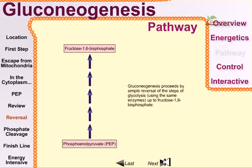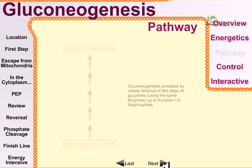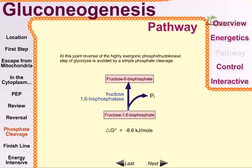Gluconeogenesis then proceeds by a simple reversal of the steps of glycolysis using the same enzymes, up to fructose-1,6-bisphosphate. After phosphoenolpyruvate is generated, it is easily converted into fructose-1,6-bisphosphate via the normal glycolysis enzymes running in reverse. Then, when fructose-1,6-bisphosphate is produced, the reversal of the highly energetic phosphofructokinase step of glycolysis must be avoided.